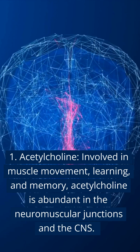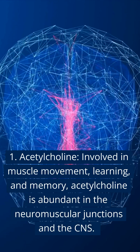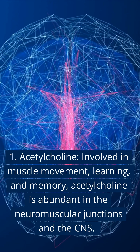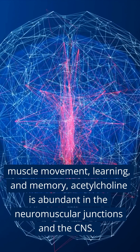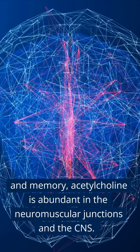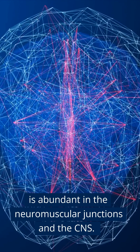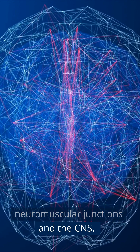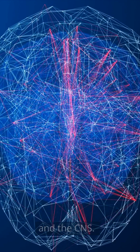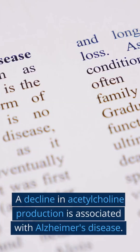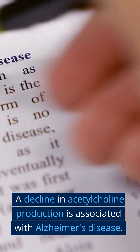Acetylcholine: Involved in muscle movement, learning, and memory, acetylcholine is abundant in the neuromuscular junctions and the CNS. A decline in acetylcholine production is associated with Alzheimer's disease.